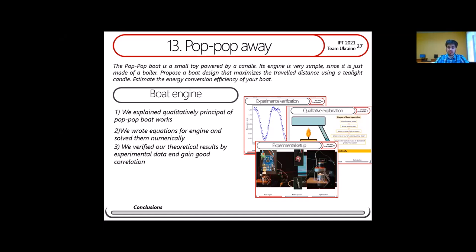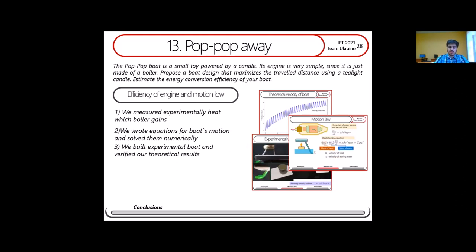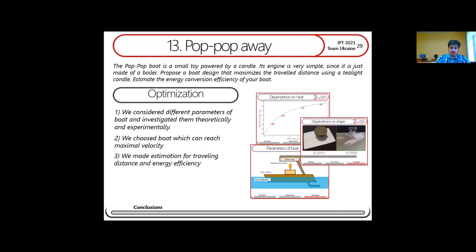In our report we considered the boat's engine and gave a qualitative explanation of its work, wrote down equations, and verified them experimentally, obtaining good correlation. Next, we measured experimentally the heat from the candle and derived motion equations which exactly describe its motion, verifying them experimentally. In the last part, we considered different parameters, varied them, and chose the boat which reaches maximum velocity, and made estimations for maximum travel distance and energy conversion efficiency. Thank you for your time.